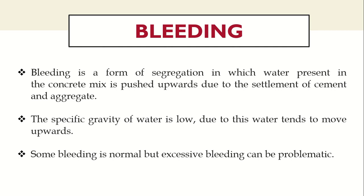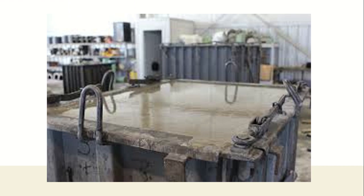Bleeding is a form of segregation in which water present in the concrete mix rises to the surface — it gets pushed to the surface — while the cement and aggregate settle down. The main reason is the difference in specific gravity, since water has a lower specific gravity of one, whereas aggregates and cement have higher specific gravity, so water tends to move up. That effect is called bleeding.